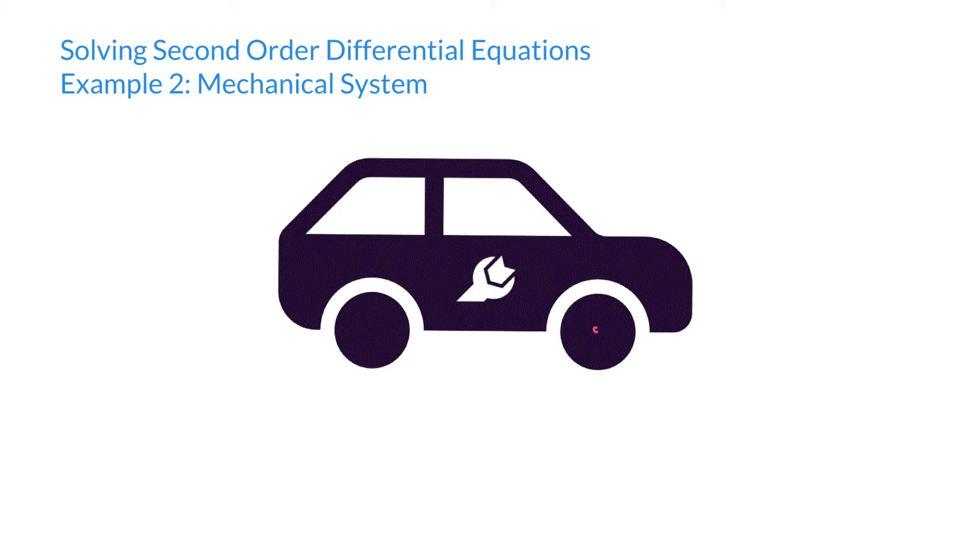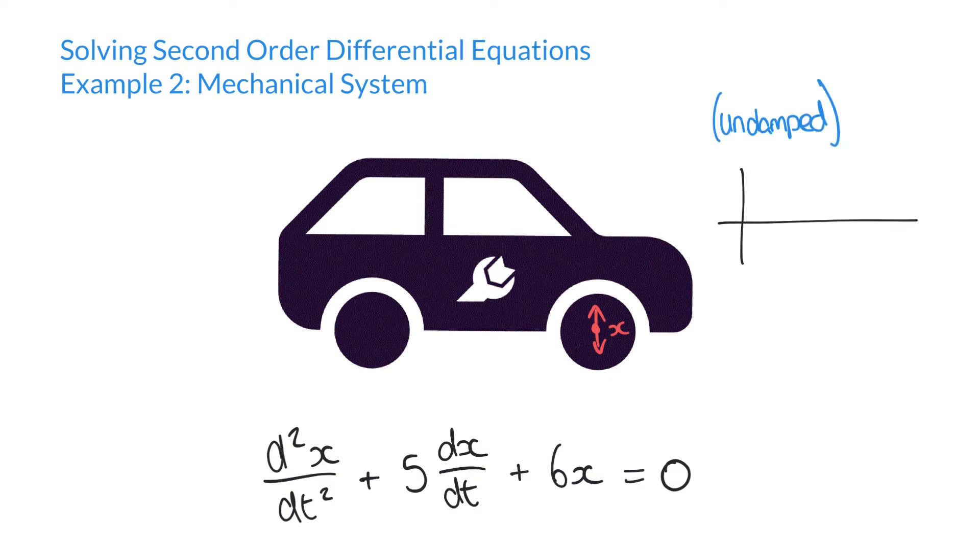Let's suppose in this example we have a car suspension and this car suspension acts with a damped oscillation, and that damped oscillation is given by this second-order differential equation: d²x/dt² + 5(dx/dt) + 6x = 0. The idea behind a damped oscillation is rather than the previous example where we saw our solution solved as a cosine function that oscillates indefinitely...